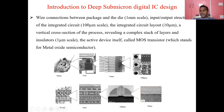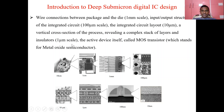This is 10 nanometer, and presently in mobile we are using 7 nanometer technology. Wire connections between the package are at the 1 millimeter square scale; inputs and outputs of the integrated circuit structures are at 100 micrometers; the IC layout is at 10 micrometers; a vertical cross-section of the process revealing a complex stack of layers and insulators is at 1 micrometer; and the active device itself is called MOS transistors, now at 7 nanometer technology.